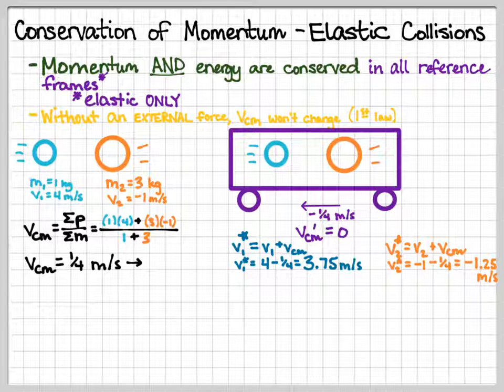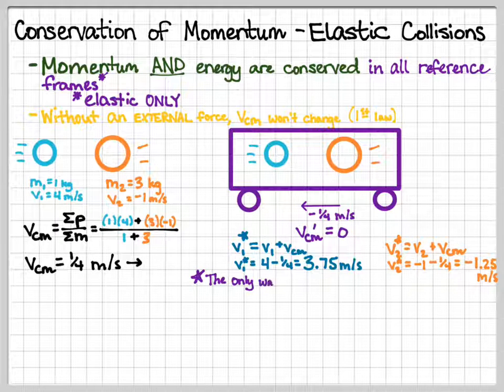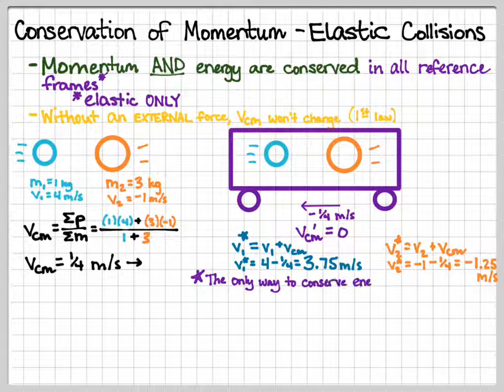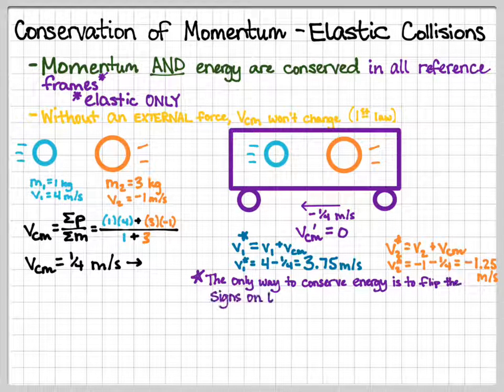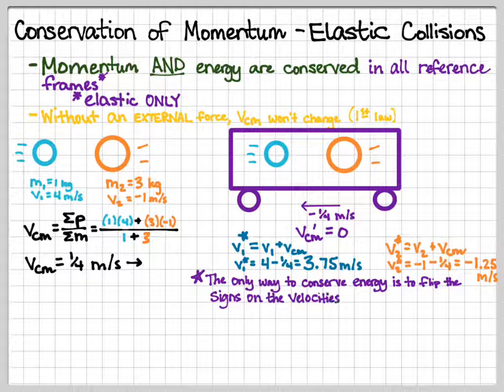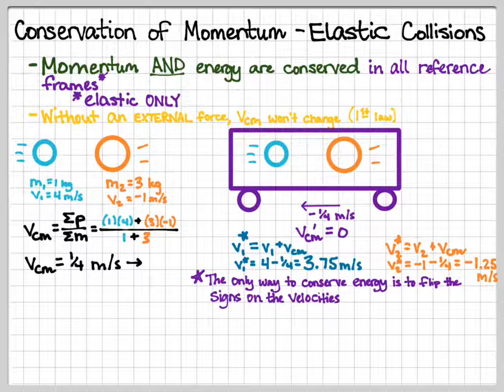So, remember earlier on the last slide, I set up two equations, and I had two unknowns, and I was able to solve for it. Well, it turns out there is only one solution to this problem. The only way for both momentum and energy to be conserved is for the signs on the velocities to flip. So you can kind of imagine that. The flipping of the signs on the velocities will make turquoise's velocity to the left, it'll make orange's momentum to the right.